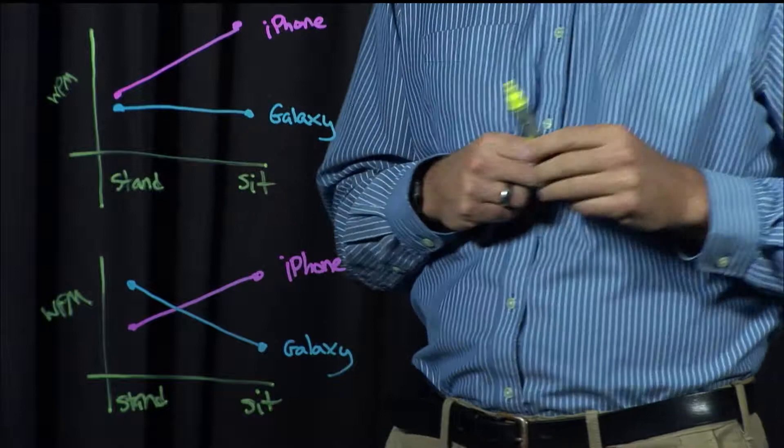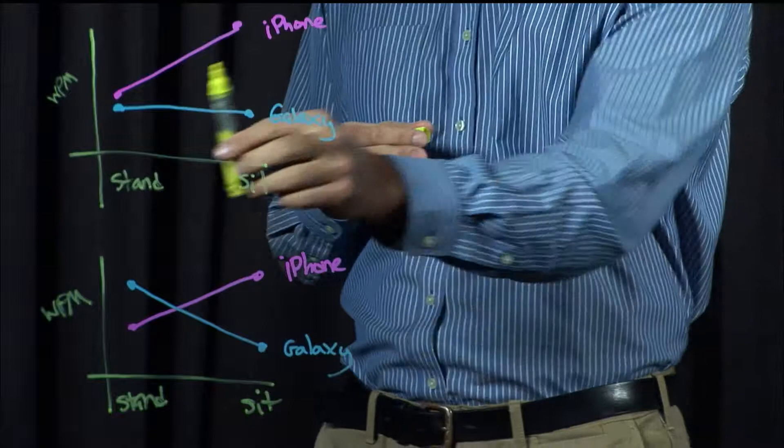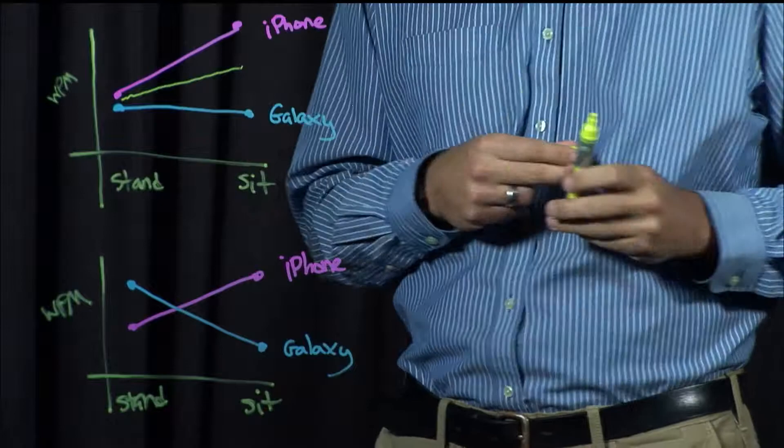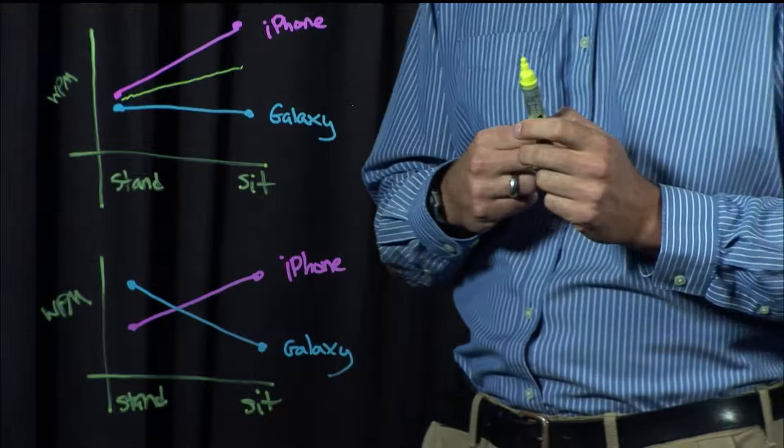Well overall, you can take the midpoint of the iPhone line and the midpoint of the Galaxy line and there is separation. We'd say yes, there's a main effect of keyboard. Is there a main effect of posture? Well we can imagine a line up through the center here, and is that line sloped? The answer in this case is somewhat. Perhaps there is still a small but main effect of posture.